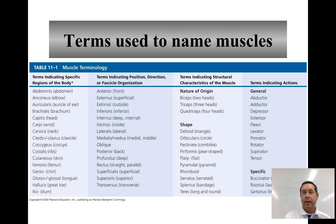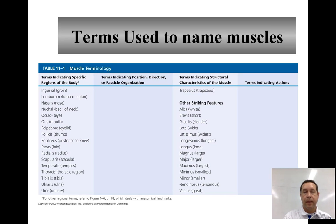And then there are actions used in naming, such as abductors, adductors, and so on, as well as specific actions like the buccinator, or trumpeter muscle. You can see some of these other examples in the table as well.